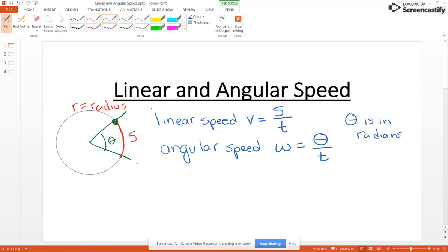Now the relationship between these two quantities, and there is a nice simple relationship, is that your linear speed is going to be the radius of the circle R times your omega. So let's look at a few examples.